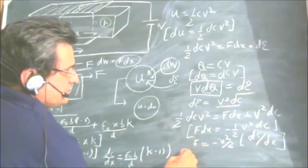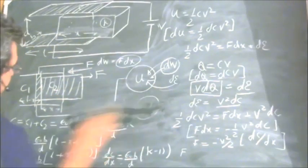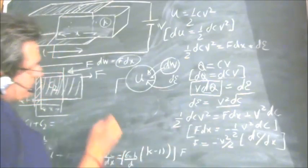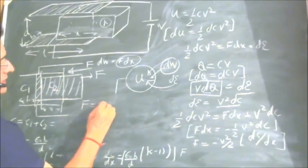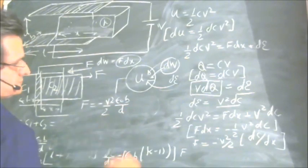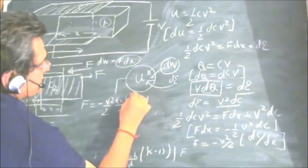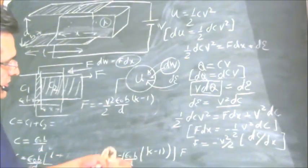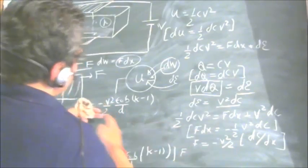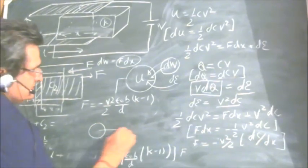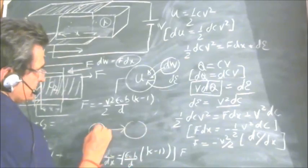The force which we need to apply to hold the dielectric at this position will be in the opposite direction. The dielectric is being pulled inside by this force. This value is equal to F equals minus (V²/2) times E0·B/D times (K minus 1), since DC/DX equals E0·B(K-1)/D. So this is the value of the force.